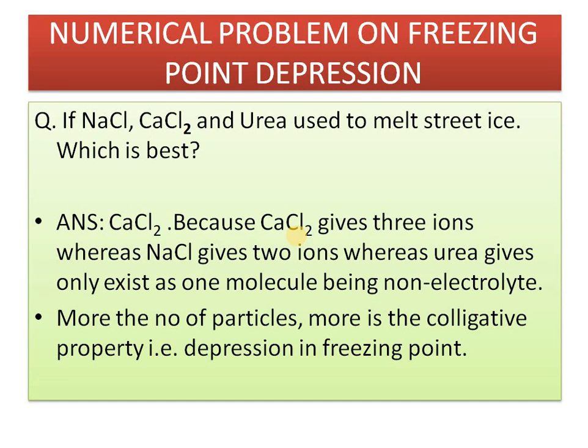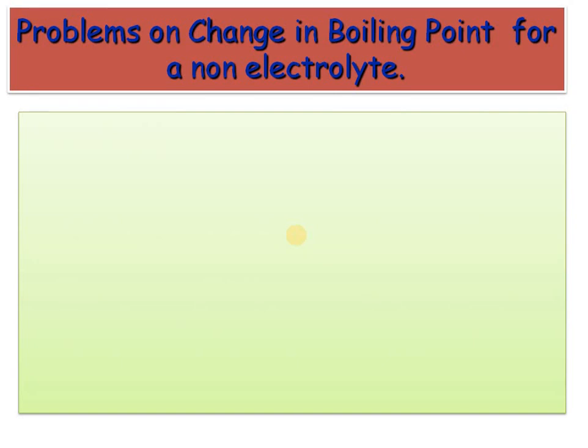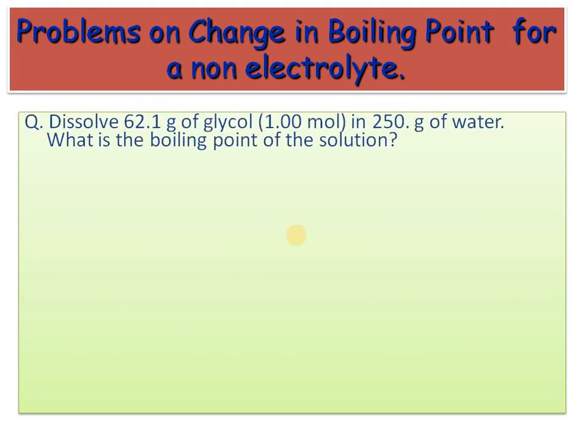This is a concept-based critical question. Sometimes the question mentions electrolyte and sometimes non-electrolyte; you have to think accordingly. If it is a non-electrolyte, i = 1. Here is a question: ethylene glycol, with 62.1 grams dissolved in 250 grams of water with a molality of 1, what is the boiling point of the solution? Formula: ΔTb = Kb·m.